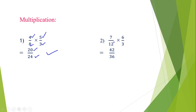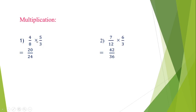Second multiplication example: 7 upon 12 multiplied by 6 upon 3. 7×6 gives 42, and 12×3 gives 36, so the answer is 42 upon 36.